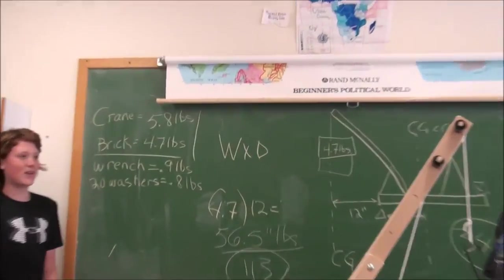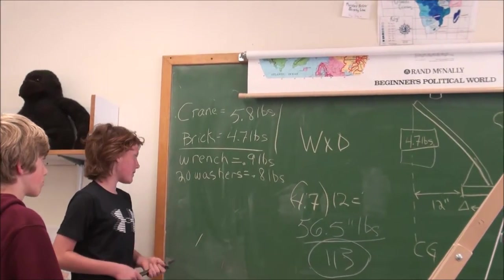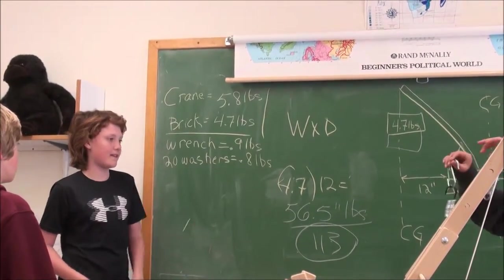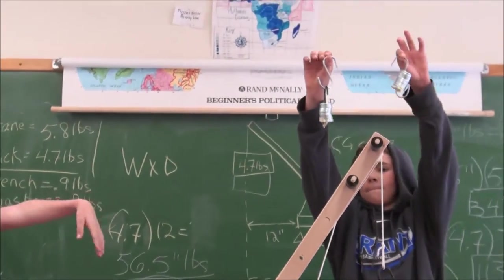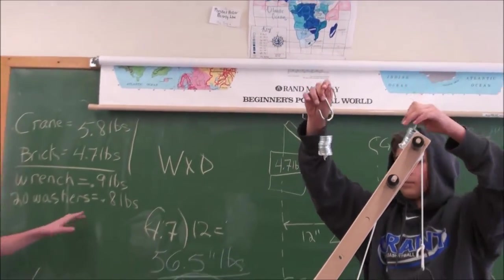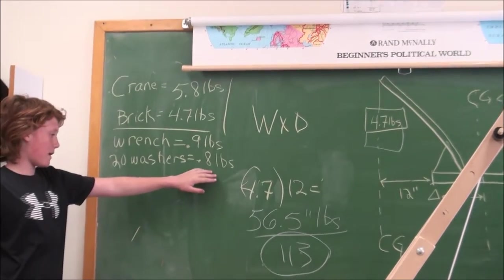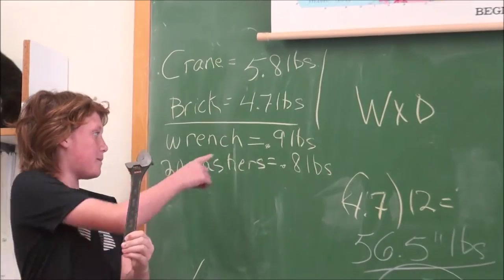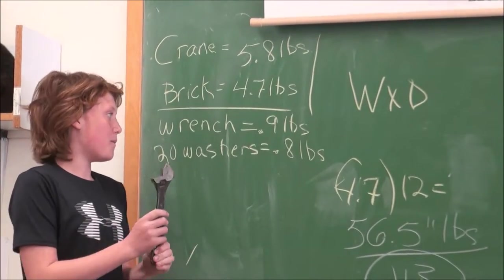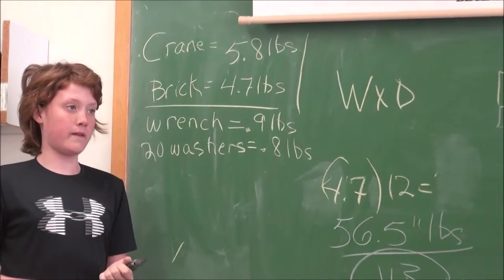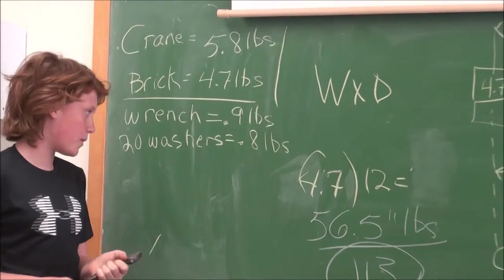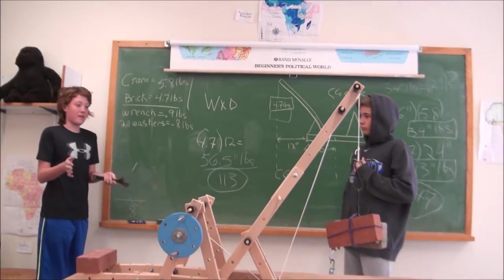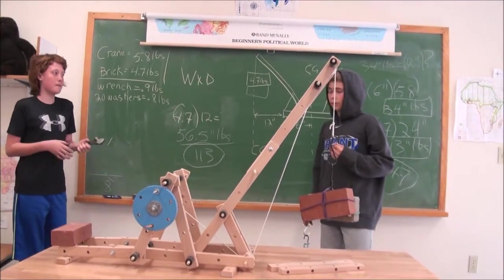We got 2.5 pounds by finding 20 washers is 0.8 pounds, and he has 40 washers right there, so that's going to be 1.6 pounds. And then this wrench is 0.9 pounds, so 0.9 plus 1.6 is going to get us 2.5 pounds, which is what we need to get this crane perfectly balanced. We'll see if it's going to tip or not.